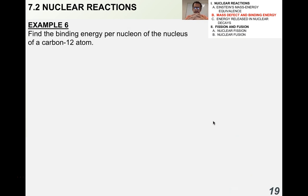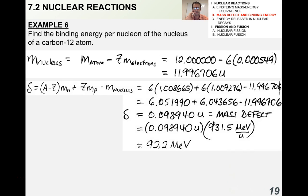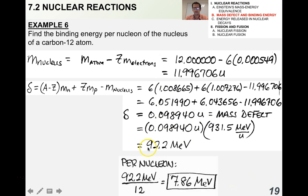As an example, find the binding energy per nucleon of the nucleus of a carbon-12 atom — you might need a periodic table. The mass of the carbon-12 nucleus is 11.996706 atomic mass units. Finding the mass defect gives 0.098940 atomic mass units, which equals 92.2 mega electron volts. Per nucleon, dividing by 12, gives 7.68 mega electron volts per nucleon.